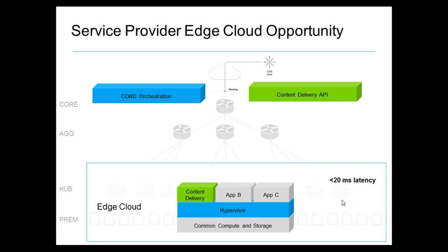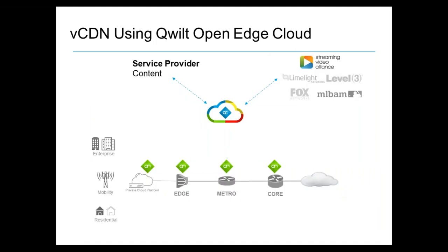I'm trying to get my head around the relationship between what you've been building with CORD and how that relates to the work that the container brigade is moving forward with. So the nodes installed within the service provider network — Quilt has over 100 service provider deployments of our edge caching architecture.